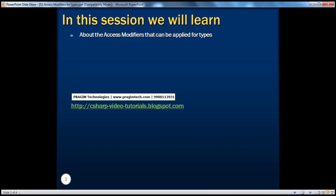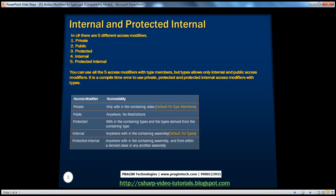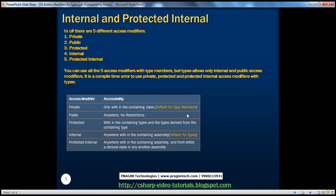In this session, we'll be learning about the access modifiers that can be applied for types themselves. In the previous session, we learned the different modifiers that can be applied for type members. In C#, there are five different access modifiers, and all five can be applied for type members. But when it comes to types, you can only use public and internal access modifiers. Trying to use any other access modifier will generate a compiler error.